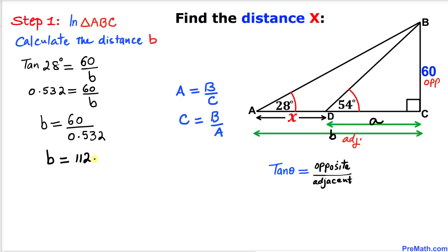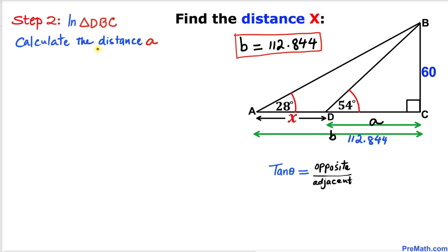So our distance b turns out to be 112.844 units. Here's our next step. Let's focus on this triangle DBC, as you can see over here, and we are going to calculate this side length a.